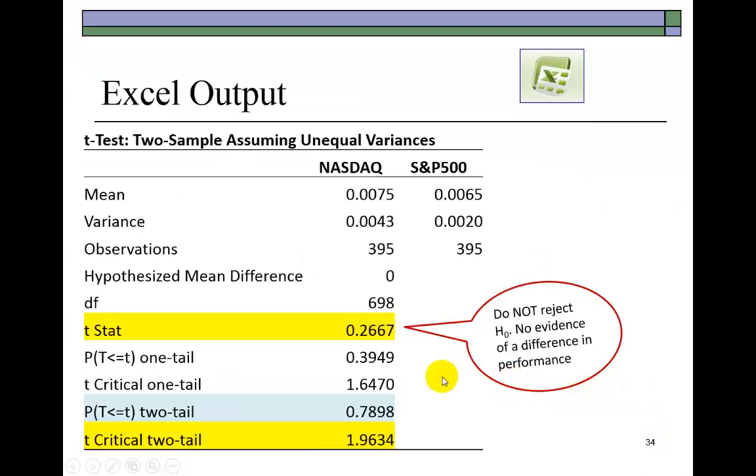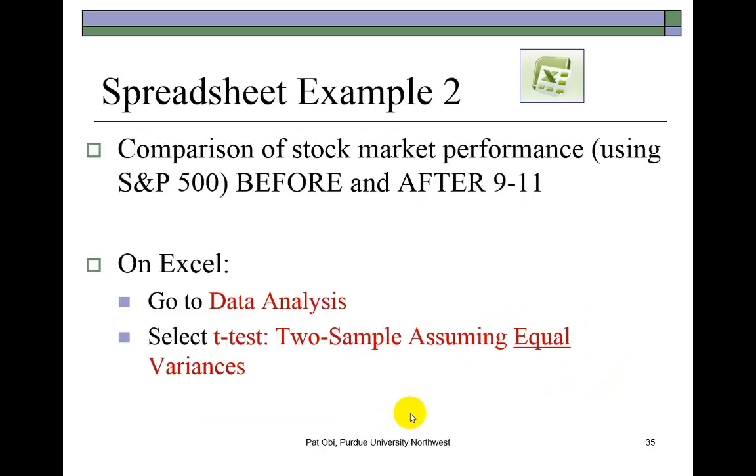There is no evidence of a difference in the performance of the two stock indices. You either compare the calculated t-statistic to the critical value, or you simply look at the p-value. This p-value of 0.79 approximately is way more than 0.05, which is the level of significance that we wish to test. In fact, it's greater than any of the three conventional levels of significance: 1%, which is 0.01, 5%, which is 0.05, and 10%, which is 0.10.